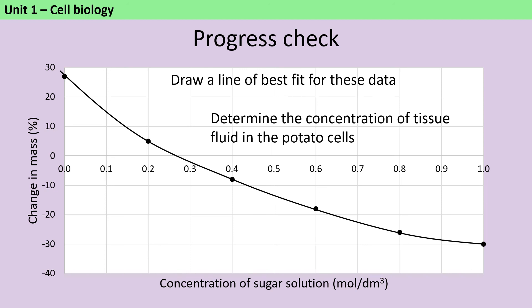Then in order to calculate the concentration of the tissue fluid, we need to find the point where the change in mass is zero. So this is where it crosses the x-axis. And although I haven't got minor grid lines here, we can agree that this is about 0.25, maybe slightly higher than that. Obviously in an exam they would give you a piece of graph paper that had the minor grid lines, and you'd be able to write that more exactly.